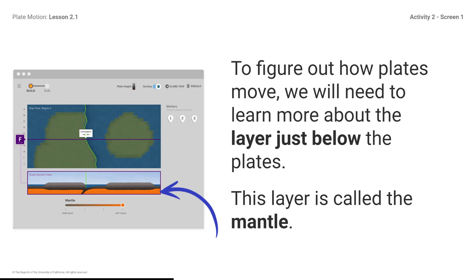To figure out how plates move, we will need to learn more about the layer just below the plates. This layer is called the mantle. Depending on the thickness of the plates above it, the mantle starts somewhere between 65 and 100 kilometers below Earth's surface. Like the plates, the mantle is made of solid rock. We will use the sim today to find out more about the mantle.